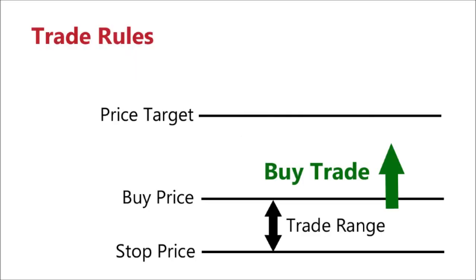For a typical buy trade setup, you have a price you want to buy at, a stock price, and a target price. The trade range is defined by the range between your buy price and your stop price. These numbers don't have to be static — your system can change them over time as market conditions change. The system is currently set up to trade a breakout, meaning it buys when the price breaks above your buy price.